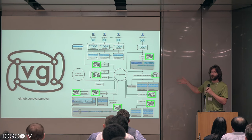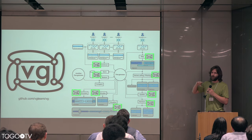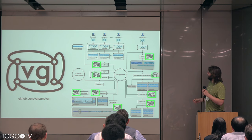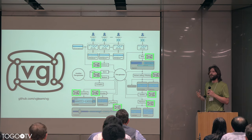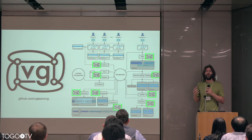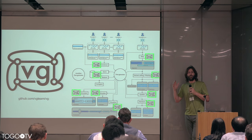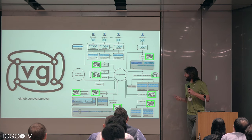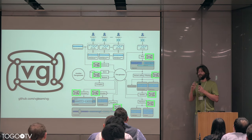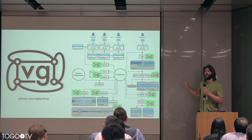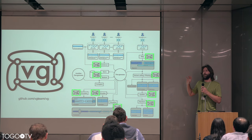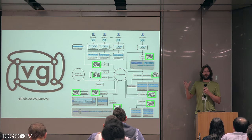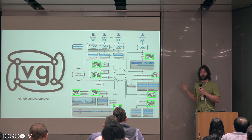So we've made this tool, VG, standing for Variation Graph. It's a collection of different algorithms that work on a common data type — the data type I showed you, which is a graph with labeled paths. And you can do a ton of stuff to it — all the things that you do with traditional NGS tools on a linear reference, but with this system.